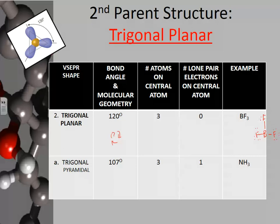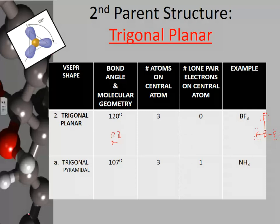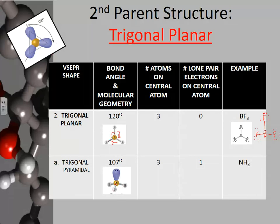Remember, boron is one of the exceptions to the octet rule and has to settle for less than 8 electrons. Trigonal pyramidal is one of the daughter structures derived from trigonal planar. In this case, you have your central atom with three atoms attached, but you also have lone pairs on the central atom. The bond angle is 107 degrees, and that's what happens with ammonia, NH3. Notice the little pyramid shape — think about it in terms of a pyramid base.